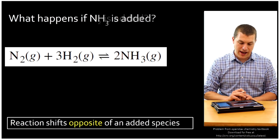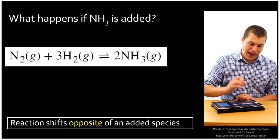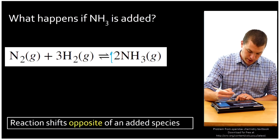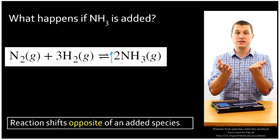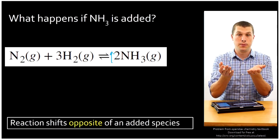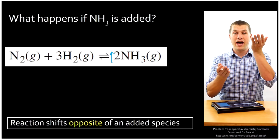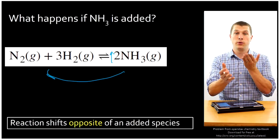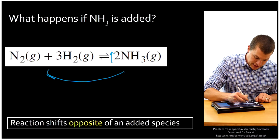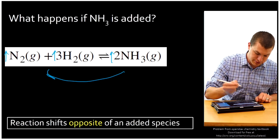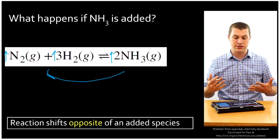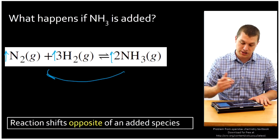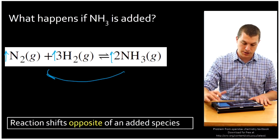What happens if I add ammonia? If I add ammonia, it's going to increase the concentration of ammonia, and that perfect balance of reactants and products is perturbed. What happens is more reactants are formed — the reaction runs backwards a little bit until we get that perfect balance again — and that's going to increase the concentration of hydrogen and nitrogen. So actually the concentration of all three is going to be increased by adding ammonia. Again, the reaction shifts to the opposite side of an added species.